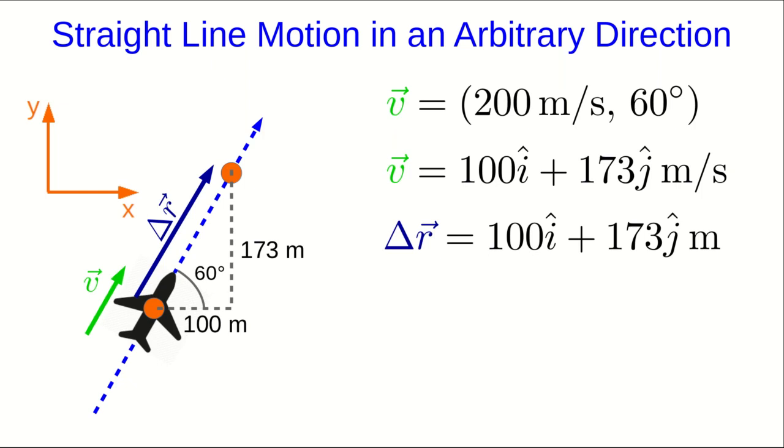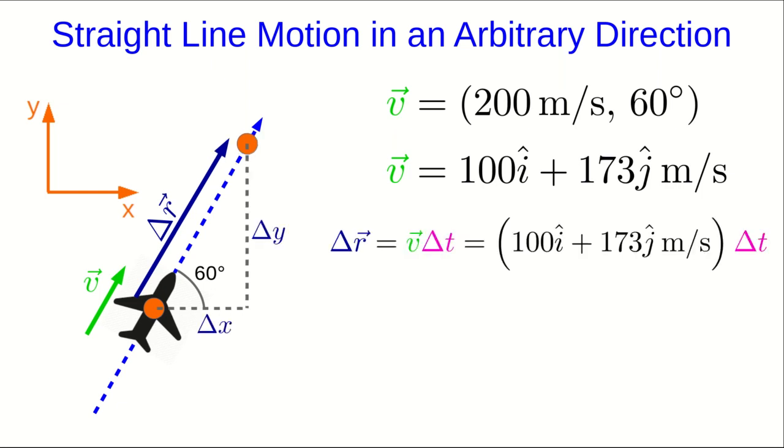This isn't all that useful yet because it's specific to one second later. What if we want to know what its displacement is at some other time? Well, notice that if we wait longer, then it will have gone farther. For example, if we wait twice as long, then each of the X and Y components of the displacement ought to be twice as big. In fact, all we need to do is find our displacement by multiplying the velocity vector by delta t.